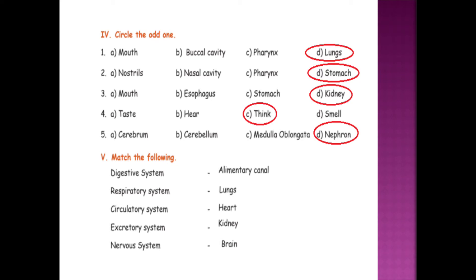Circle the odd one. Mouth, buccal cavity, pharynx — odd one is lungs. Nostrils, nasal cavity, pharynx — odd one is stomach. Mouth, esophagus, stomach — odd one is kidney. Taste, hear, think — odd one is smell. Cerebrum, cerebellum, medulla oblongata — odd one is nephron. For match the following: digestive system — alimentary canal, respiratory system — lungs, circulatory system — heart, excretory system — kidney, nervous system — brain.